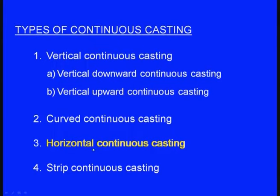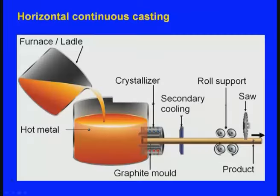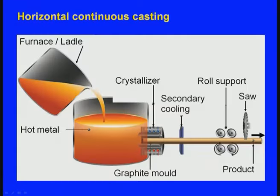Next, let us see the horizontal continuous casting. In the case of vertical downward continuous casting, the solidified bar was coming downwards. In vertical upward continuous casting, the solidified bar was going upwards. In curved continuous casting, the bar came downwards, took a curve, and became horizontal. Here, the solidified bar right from the beginning will be moving horizontally. That is the principle here.